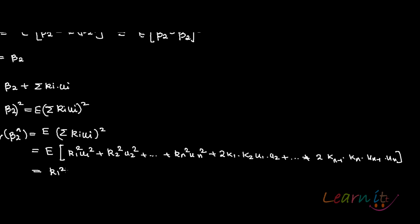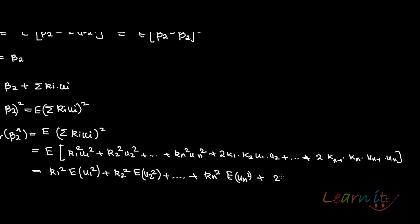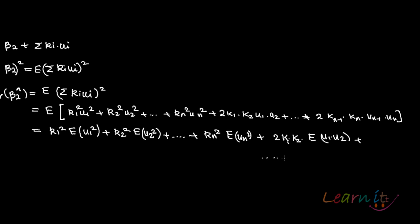Now you put the expectation over this entire expression. Since ki are non-stochastic, they come out of the expectation sign: K1 squared E of u1 squared, plus K2 squared E of u2 squared, and so on to Kn squared E of un squared, plus 2 K1 K2 E of u1 u2, and so on to K(n-1) Kn E of u(n-1) un.